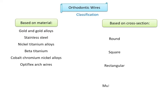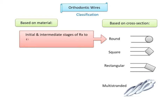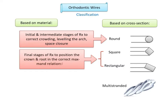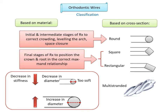Classification based on cross-section: wires can be either round, square, rectangular, or multi-stranded. Round wires are used for the initial and intermediate stages of treatment to correct crowding or level the arch. In the final stages, in order to position the crown and root in the correct maxillomandibular relationship, either square or rectangular wires are used. Regarding wire diameter: a decrease in diameter reduces stiffness to the point where the wire becomes too soft for orthodontic use, whereas an increase in diameter makes the wire too stiff. Therefore, the ideal wire diameter should be between these two extremes.